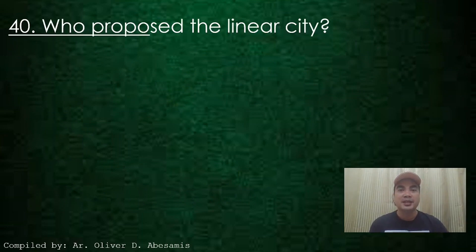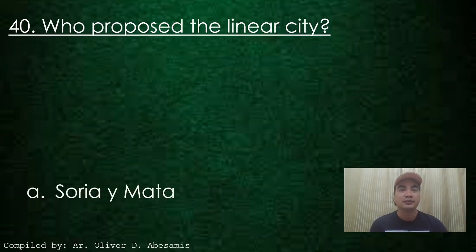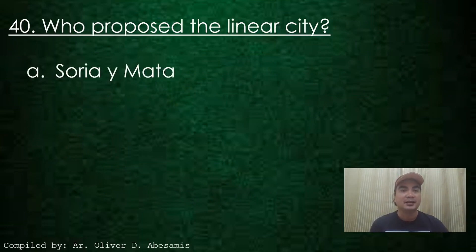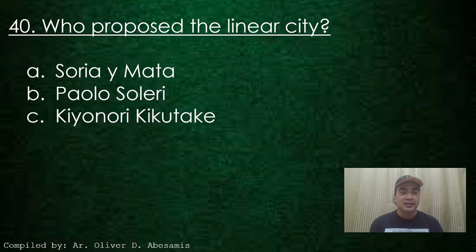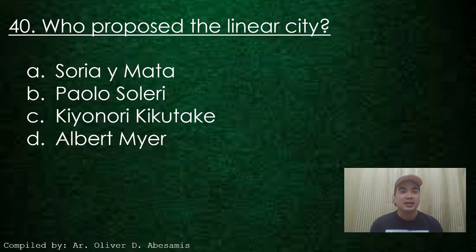Next. Who proposed the Linear City? A. Soria y Mata, B. Paolo Soleri, C. Kiyonori Kikutake, D. Albert Mayer. Answer: A. Soria y Mata.